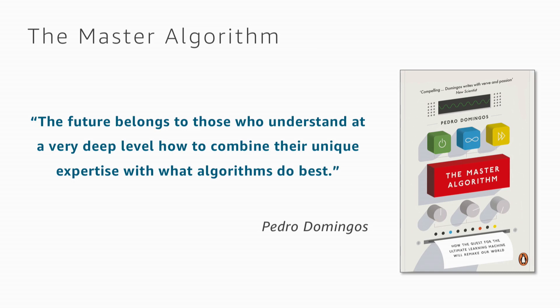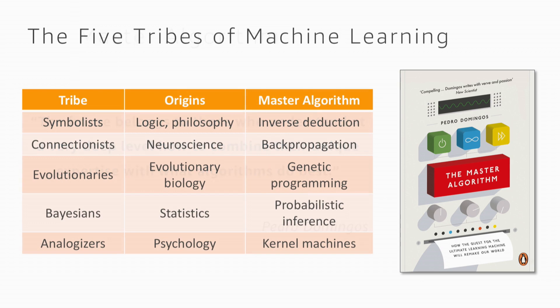Moving into machine learning, algorithms will be even more important in the future. The capacity to choose the right way to analyze and understand data will make a real difference. Pedro Domingos, author of The Master Algorithm, explores the quest for the ultimate learning machine. According to him, there are five tribes of algorithms depending on where you draw your inspiration.